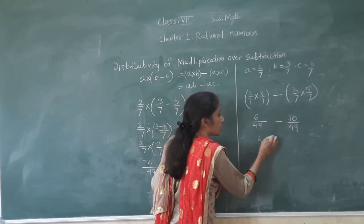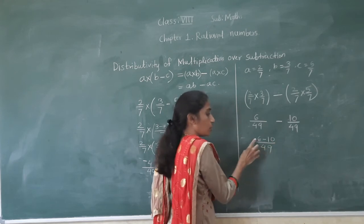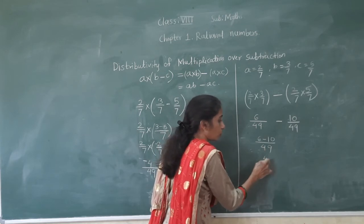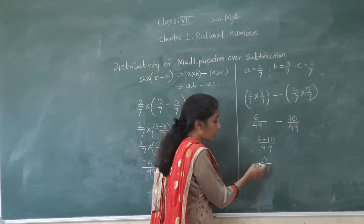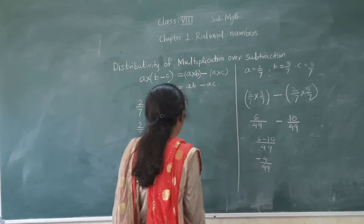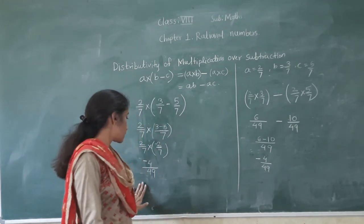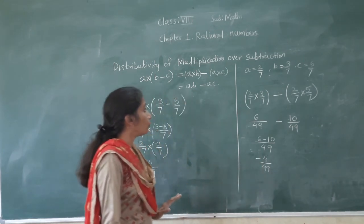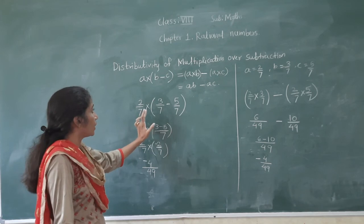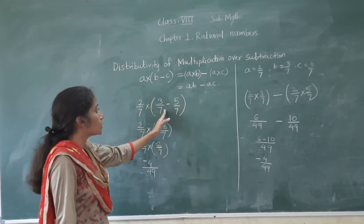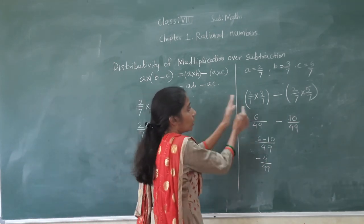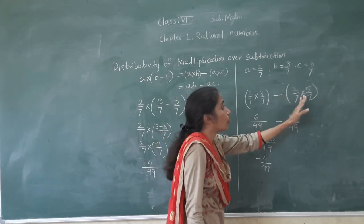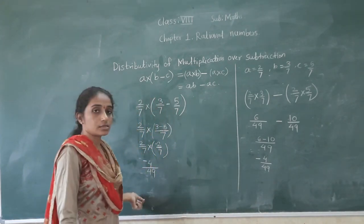The denominators are same, so let's subtract the numerators: 6 minus 10 upon 49. Since one number is positive and the other negative, subtract 6 from 10 — you get 4 — and the sign is negative. So minus 4 upon 49. We got the same answer. Here also we got minus 4 upon 49. So 2 upon 7 multiplied by bracket 3 upon 7 minus 5 upon 7 is equal to 2 upon 7 into 3 upon 7 minus 2 upon 7 multiplied by 5 upon 7. Please understand.